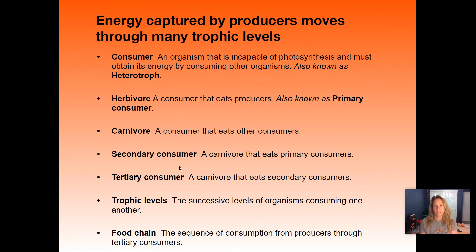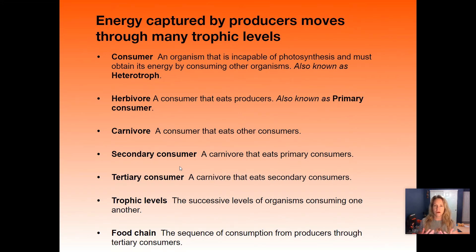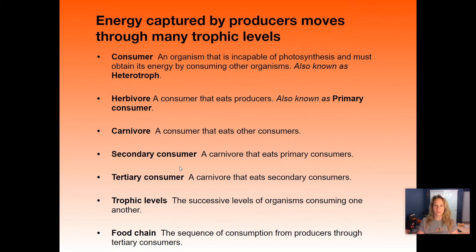Trophic levels matter when looking at the overall abundance or diversity of an ecosystem, because it depends on how much energy is available. A desert doesn't have much diversity because there aren't many producers and not much energy available, so you can't support a wide diversity of life. As you go up the scale of consumers, there is less and less energy available due to entropy. The food chain shows how energy moves through the ecosystem.